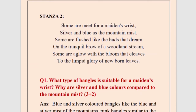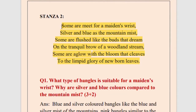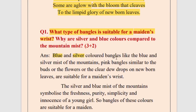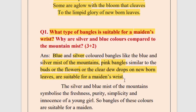Now we move to questions from the second stanza. Stanza two: 'Some are meet for a maiden's wrist, silver and blue as the mountain mist; some are flushed like the buds that dream on the tranquil brow of a woodland stream; some are aglow with the bloom that cleaves to the limpid glory of newborn leaves.' First question: what type of bangles are suitable for a maiden's wrist? The colors are blue and silver, similar to the silver mist of the mountains, and also pink bangles similar to buds or flowers.